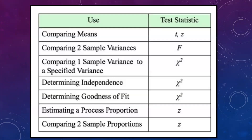Here are various test statistics used for different purposes. T and Z are used for comparing means — T for small samples and Z for large samples. While comparing two sample variances, we use the F test. While comparing one sample to a specified variance, we use the chi-square test. Chi-square is also used for determining interdependence and goodness of fit where qualitative terms are involved. For estimating process proportion and comparing two sample proportions, we again use the Z test.